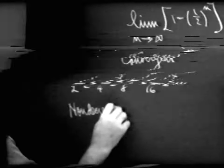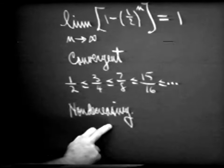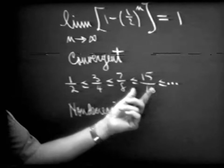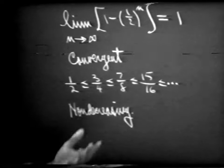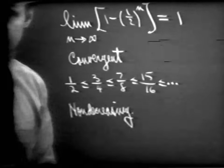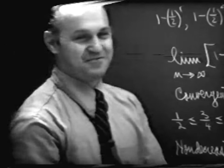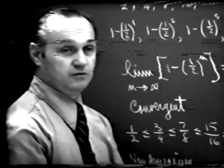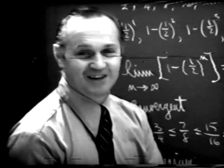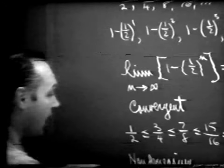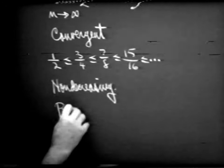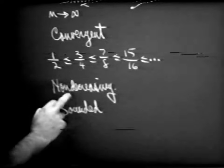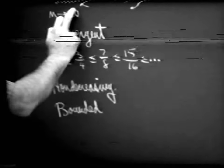We call this a non-decreasing sequence. And notice that each one of these terms can be thought of as being less than or equal to some number. Give me some number in which every term here in this sequence is going to be less than or equal to — Rick says one, and in fact two would also work. There are lots of numbers. When this is the case, we give the sequence another name: we call it bounded. So here we have an example of a bounded, non-decreasing sequence which converges — that is, it has a limit.